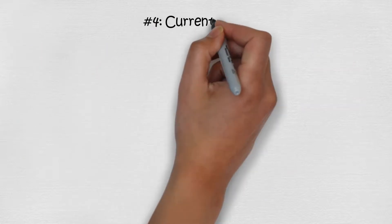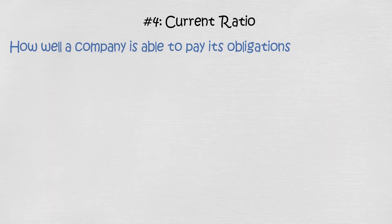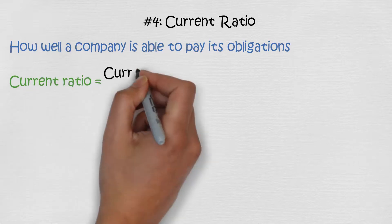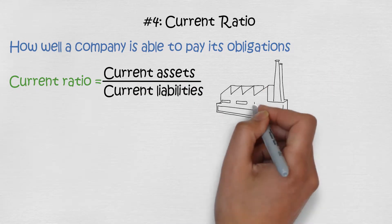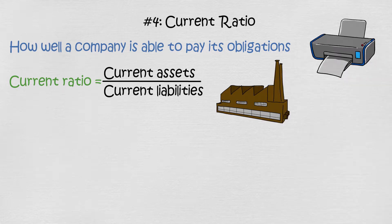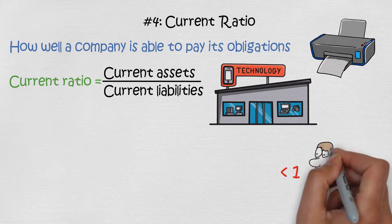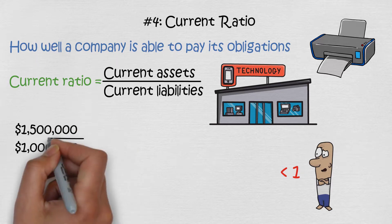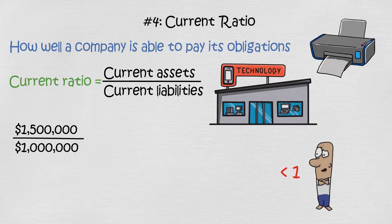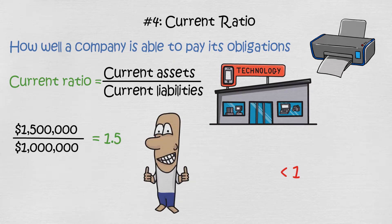Financial ratio number 4: current ratio. The current ratio also tells us how well a company is able to pay its obligations. Unlike the quick ratio, it is calculated by dividing all current assets by current liabilities, including assets not easily converted to cash. The higher the current ratio, the better, though it varies by industry. If it's less than 1, the company cannot pay short-term obligations well. For example, with $1.5 million in current assets and $1 million in liabilities, the current ratio is 1.5 — meaning short-term obligations can be paid without problems.